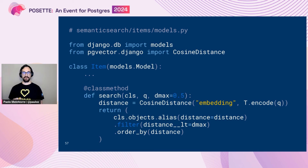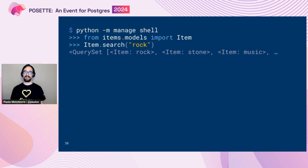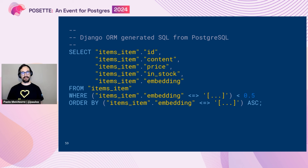We can see this in action in our Django shell. We imported Item and used the search method with the same word we used before. But in this case, we get results with words that are very different from the search term, but with a contextual meaning connection with the original word — like 'stone', 'rock', or 'music'. Under the hood, it performs a SELECT query using the specific pgvector syntax for cosine distance, filters by distance below a certain threshold, and uses the same syntax in the ORDER BY clause.